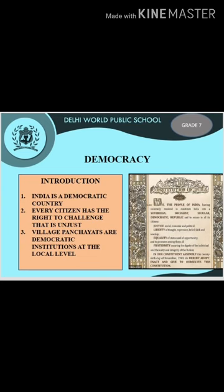Let's see the origin of the word democracy. The term democracy is derived from the Greek word 'demokratia' — demos means people and kratos means rule, that is, rule by people. Democracy is a form of government in which the people have the authority to choose their governing legislation. Generally, there are two types of democracy: direct democracy and indirect democracy.